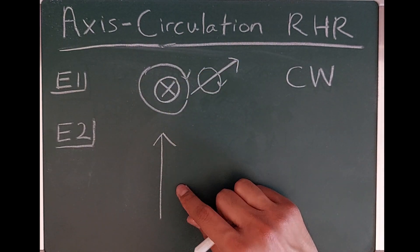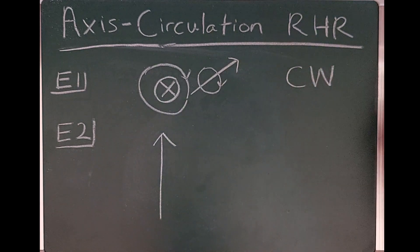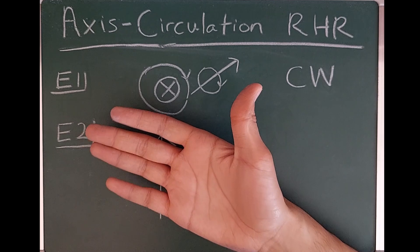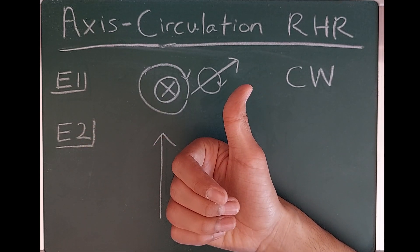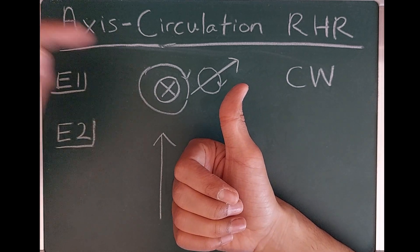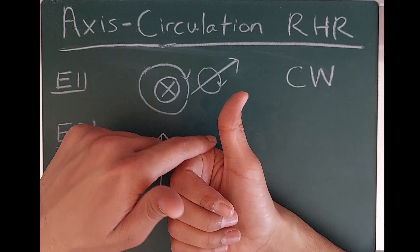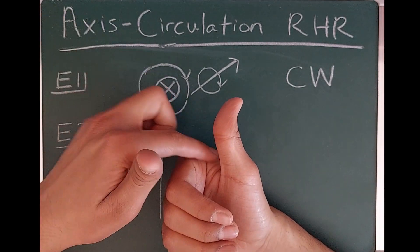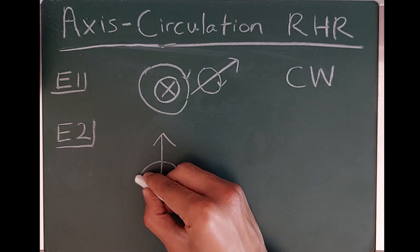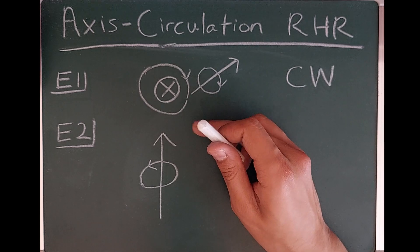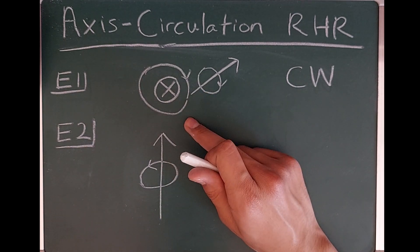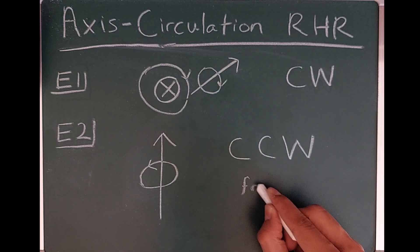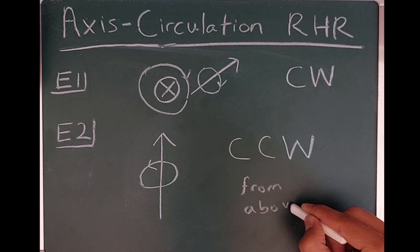Here's the second example: a vector pointing straight north, in the plane of the chalkboard. I point my thumb in the direction of that north-pointing vector and wrap my fingers around the axis. The direction of circulation is a bit hard to describe, so let's draw it first and then view it from above or below. Viewed from above, the direction of circulation is counterclockwise — and that is how we describe it with the axis circulation right-hand rule.